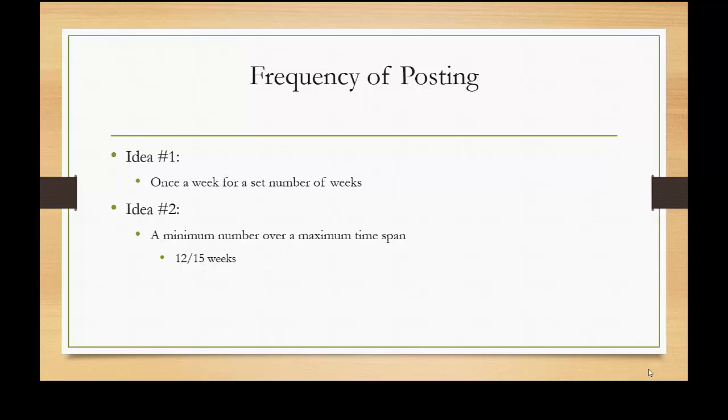Idea number two, this is what I personally do, is we do a minimum number over a maximum time span. So you're going to blog 12 times once a week for 12 weeks out of 15 weeks. Or if you use a nine-week model, you might say you have to blog at least eight times once a week for eight weeks out of nine weeks.